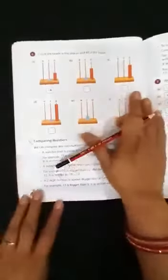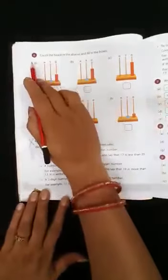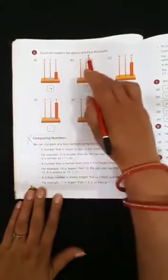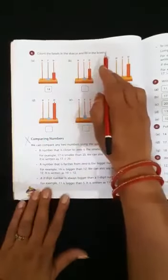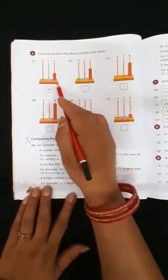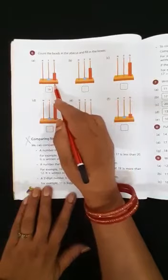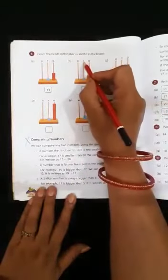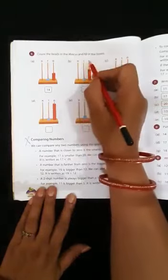Now turn the page. Number 6. Count the beads in the abacus and fill in the boxes. Now here beads are given on the tens and ones place. We will count and write the number. Now this is tens place and this is ones place.